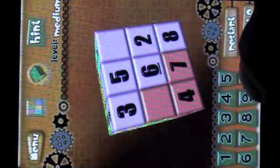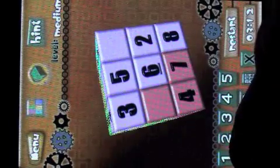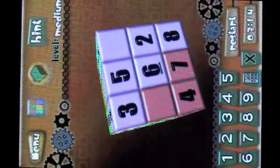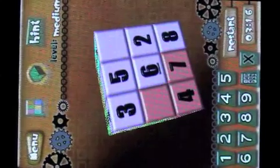If you are not sure of a number placement, you can use the notation feature in 3DUCO. Select the notation key at the bottom. You will see that the numbers turn white. In this example, I need a 1 and a 9 on this side of the cube.